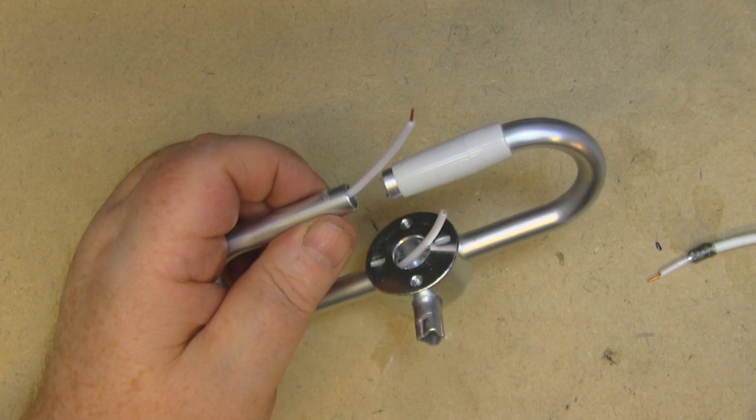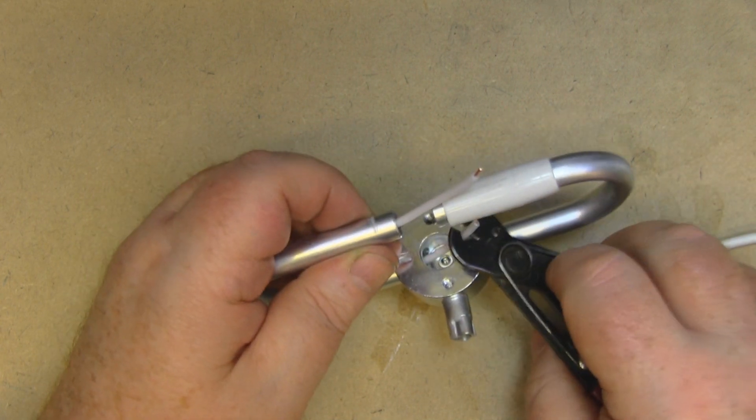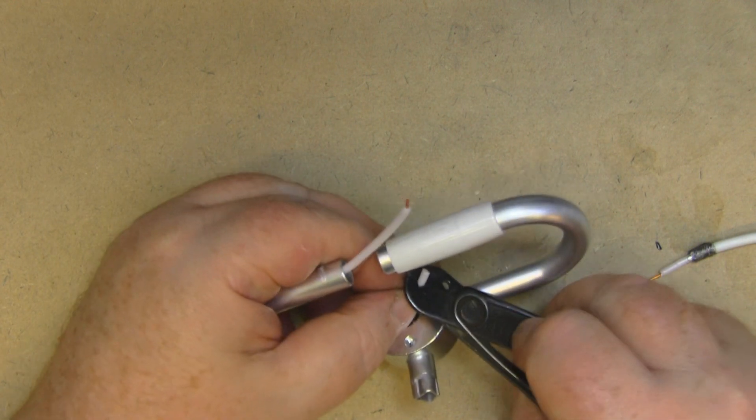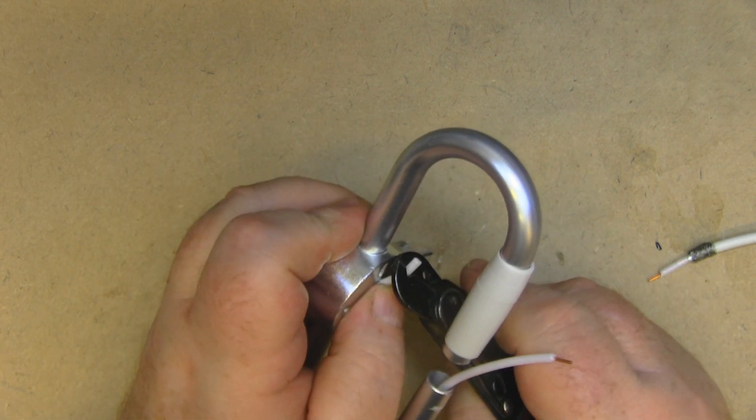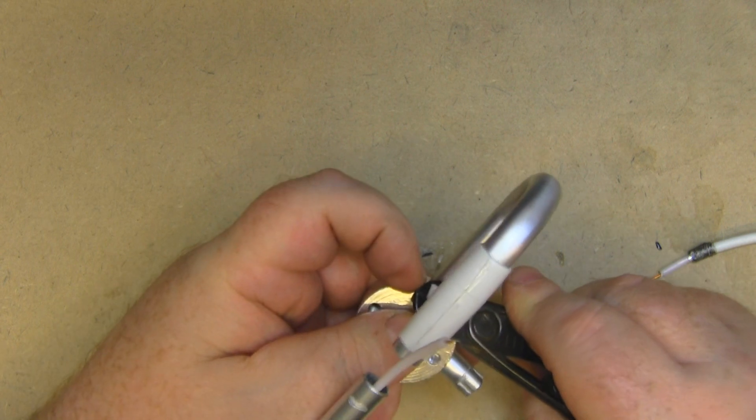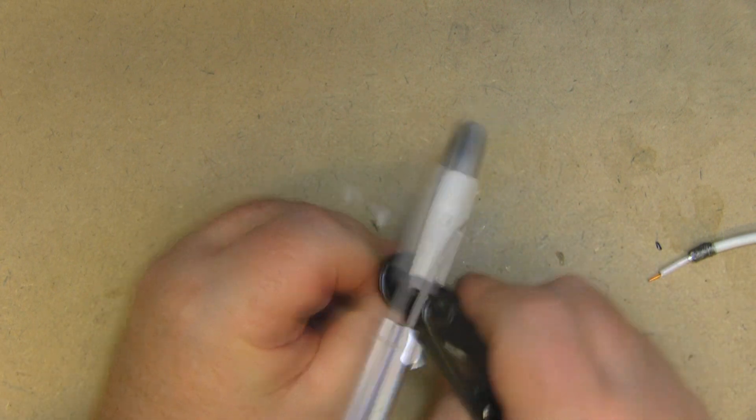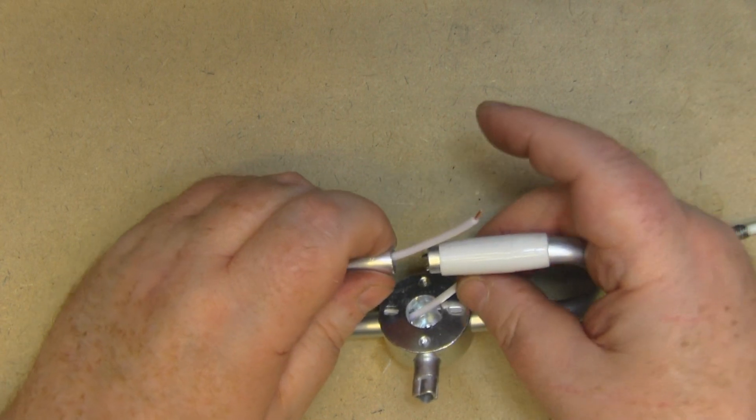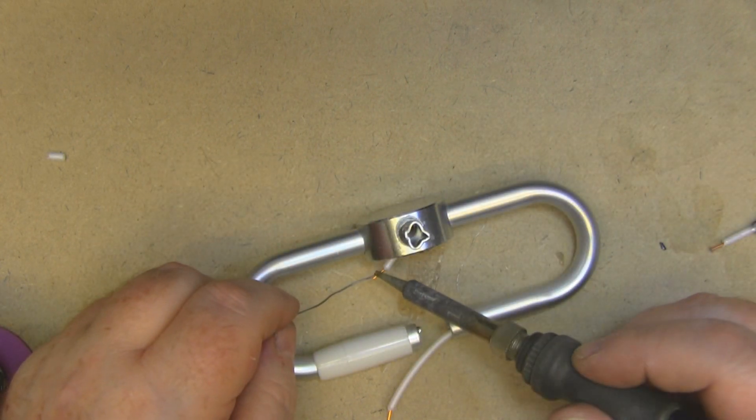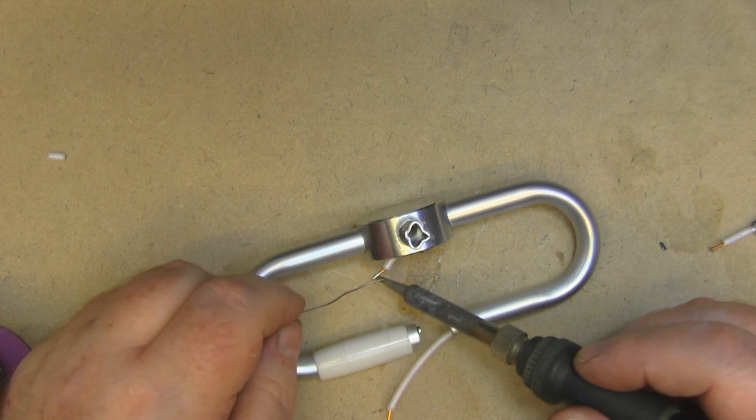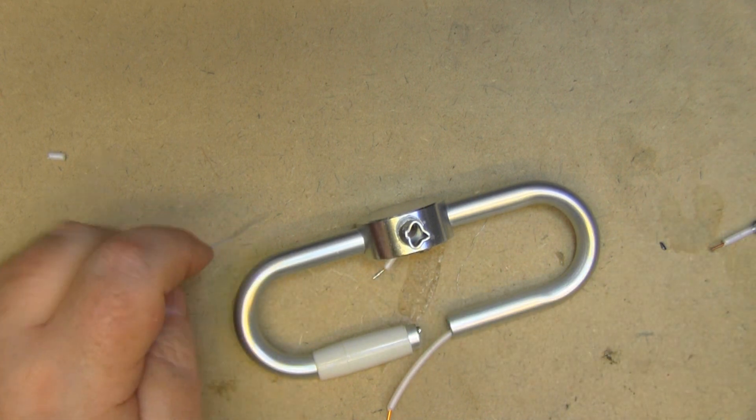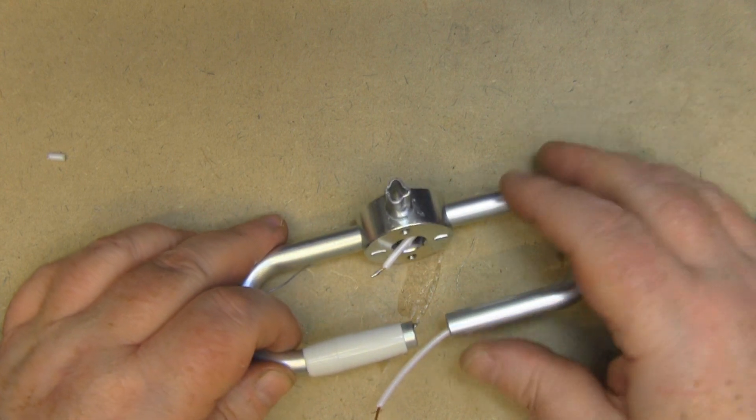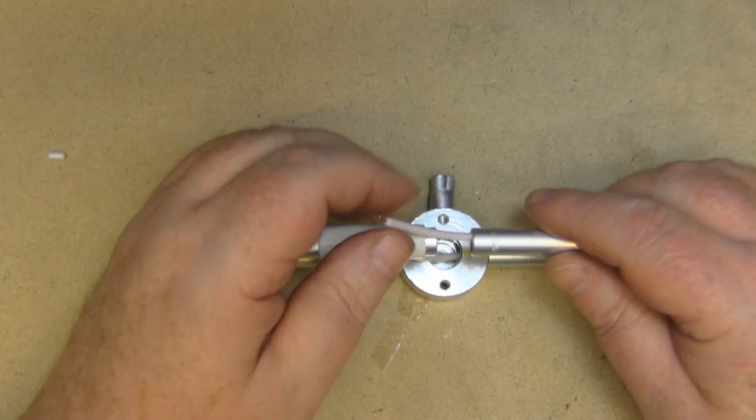So we just need to strip that end of the wire. We don't need a great deal, just enough to solder onto. I'll just put a little bit of tin on there as well. Might have a little bit too much exposed there, but we can always trim it back. It's better to have a little bit too much than not enough.